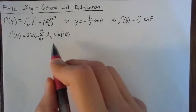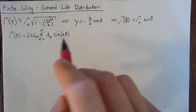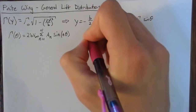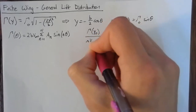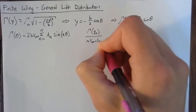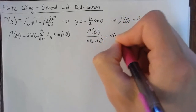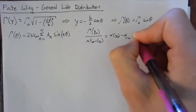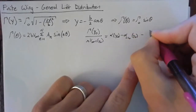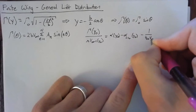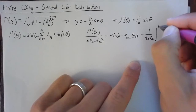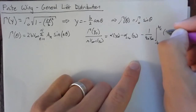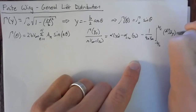Now, if you remember, we need to plug this into our fundamental equation for finite wings. And if we rewrite that, we say that gamma of y naught over pi times V infinity times c of y naught is going to be equal to alpha of y naught minus alpha where lift is equal to zero of y naught, minus 1 over 4 pi times V infinity times the integral from negative b over 2 to b over 2 of d gamma dy times dy, all over y naught minus y.